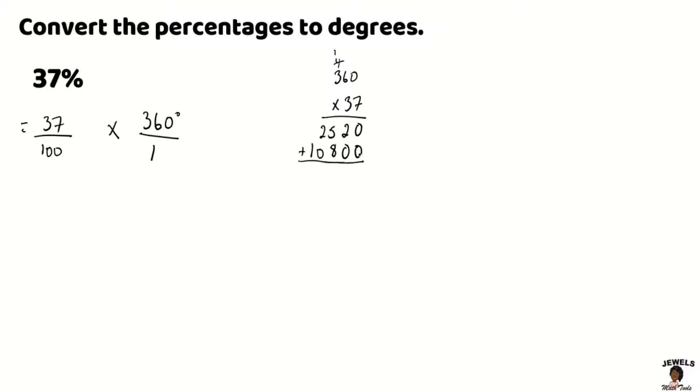Let's sum our numbers together. 0 plus 0 is 0, 2 plus 0 is 2, 5 plus 8 is 13, 2 plus 1 will give us 3, and we're going to bring our 1 down. So we now have 13,320 degrees with 100 as our denominator.